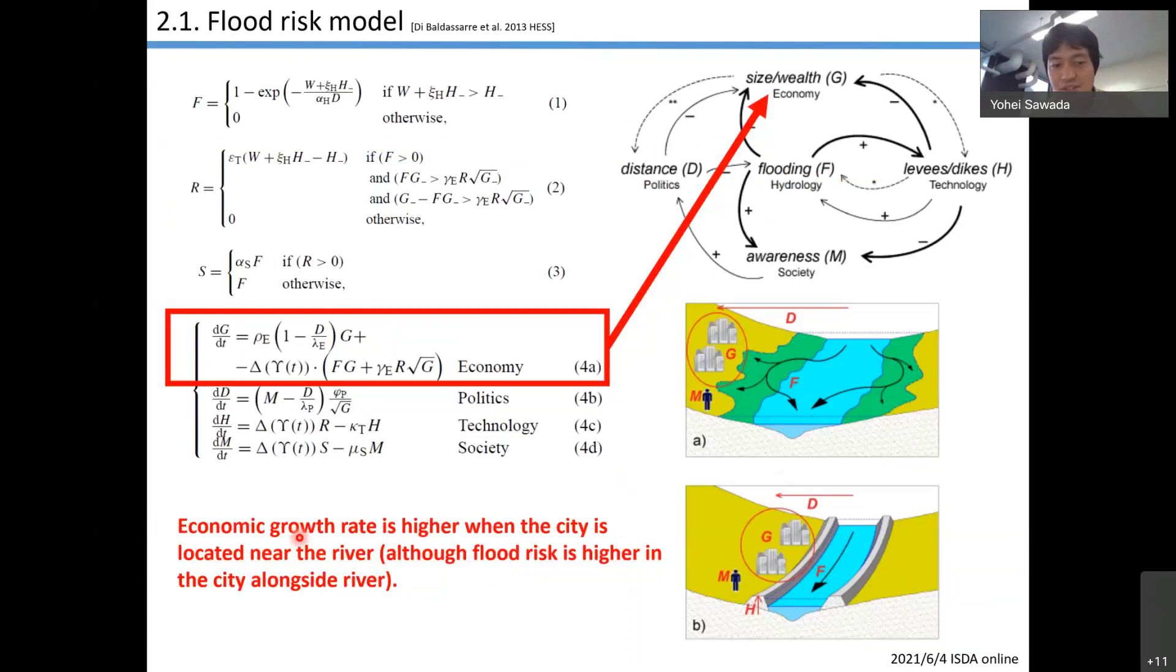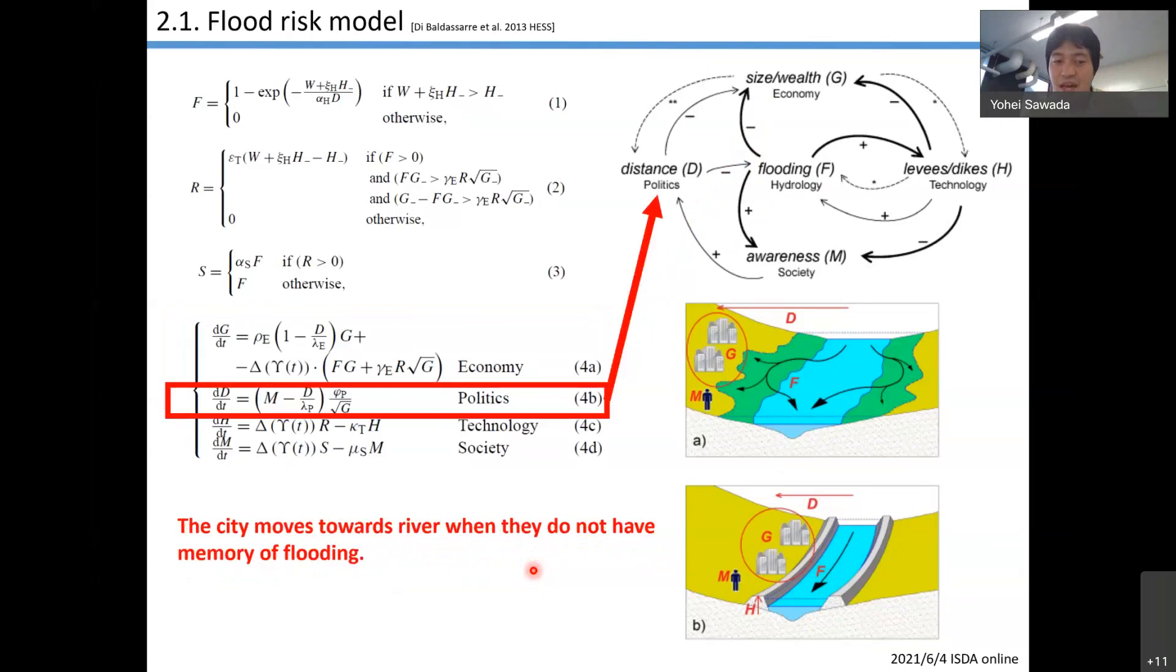This is a simplified function of economic growth. Economic growth rate is higher when the city is located near the river. We assume that the place around the flood plain or around the river is economically more efficient than mountainous areas. I think this is a reasonable assumption, at least qualitatively. Growth rate is higher around the river. However, flood risk is also higher in the city alongside the river. So we face the trade-off between flood risk and efficiency of economy. The city moves towards the river when they do not have memory of floods. If they forget about floods, they undermine the risk of huge floods, so they're going to make the city towards the river in order to maximize economic efficiency.